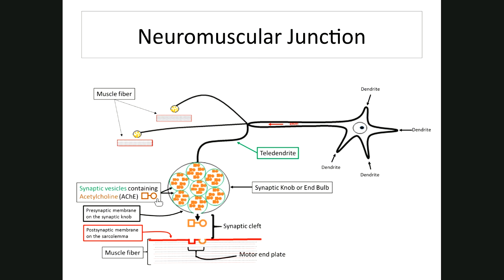The synaptic knob is located just above the post-synaptic membrane. The membrane of the synaptic knob facing the muscle cell is the presynaptic membrane. The space between them is the synaptic cleft. The post-synaptic membrane is the sarcolemma — the membrane after the cleft. The synaptic cleft is the physical space between the synaptic knob and the post-synaptic membrane; they do not touch.